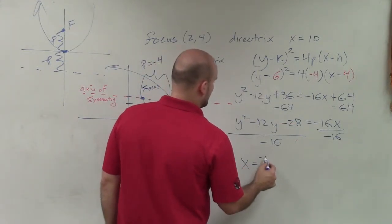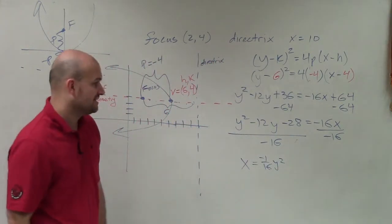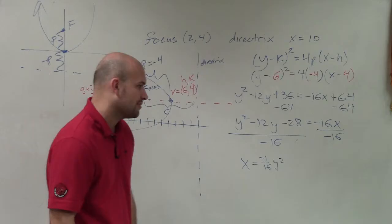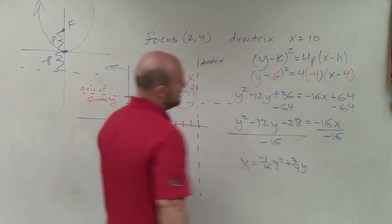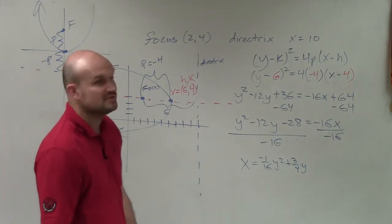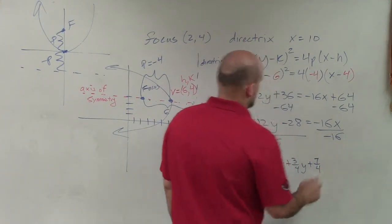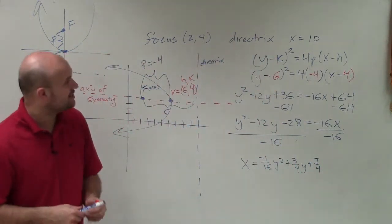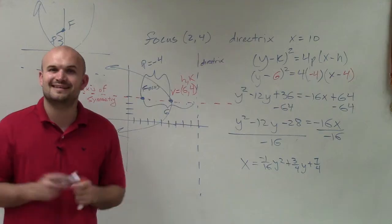And then I'm going to write my x by itself, and I will reduce all the fractions here. So I have x = -1/16 y². -12 over -16, that can be reduced down to 3/4, a positive 3/4 y. And then also I can do here, that could be reduced down to 7/4. So there you go, ladies and gentlemen. That is how you write your parabola from giving the focus and the directrix into standard form. Thanks.